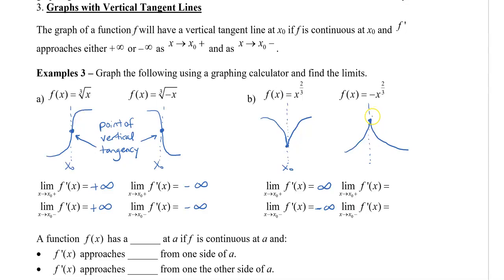For the second one, negative x to the 2/3rds: as we approach x₀ from the right, we can see that our slope is getting more and more negative. And then when we approach from the left side, you can see that our first derivative is getting more and more positive, so it's positive infinity. You don't need to put the plus sign when you say positive infinity, but I put it here just to emphasize the difference.